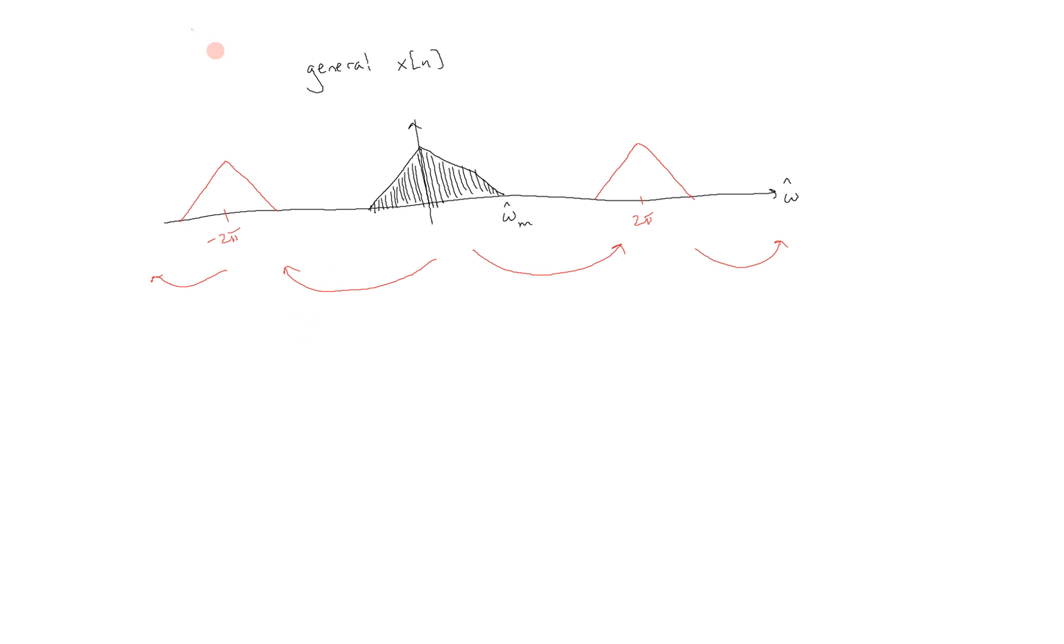Now an important point to note here is this one over here, and that is 2π minus omega hat sub m. Just like due to symmetry here, this was at -omega hat sub m, so this point right here is at 2π minus that. Now we can see in this illustration, the way that I have drawn it, that this is greater than omega hat sub m. So these two things are disjoint.